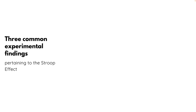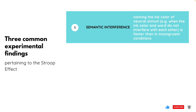Three recurring experimental findings have been observed in Stroop task experiments. The first finding pertains to semantic interference, which states that naming the ink color of neutral stimuli — where the ink color and word do not interfere with each other — is faster for participants compared to incongruent conditions. It is called semantic interference since the relationship in meaning between the ink color and the word is at the root of the Stroop interference.